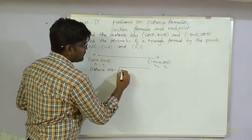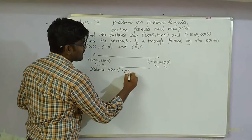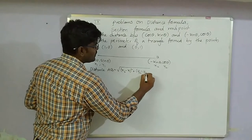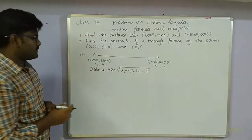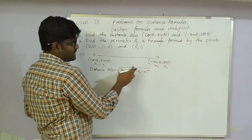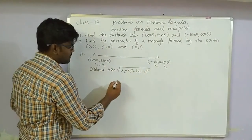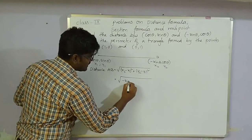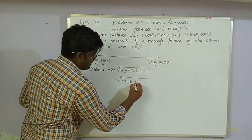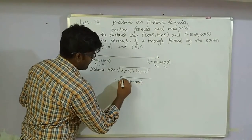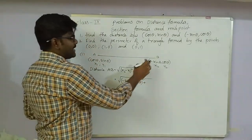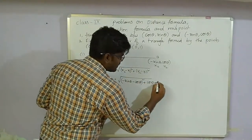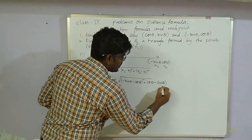Distance AB = √[(x2 - x1)² + (y2 - y1)²]. Substituting: x2 - x1 = (-sinθ - cosθ), and y2 - y1 = (cosθ - sinθ). So AB = √[(-sinθ - cosθ)² + (cosθ - sinθ)²].